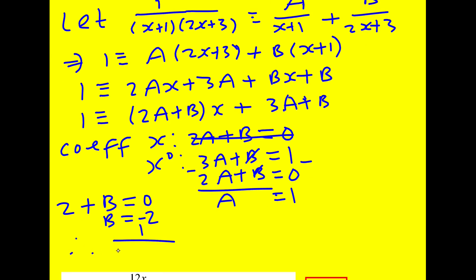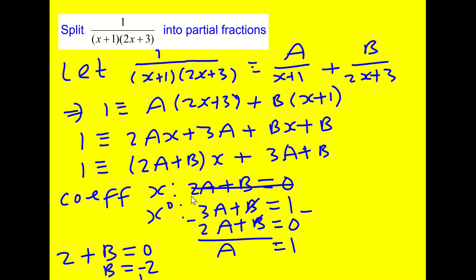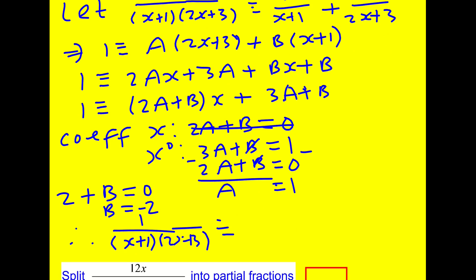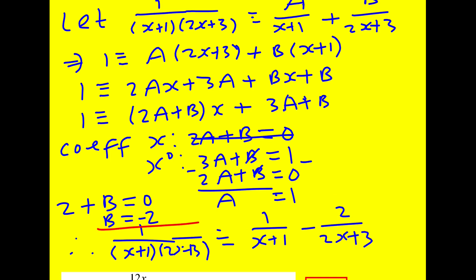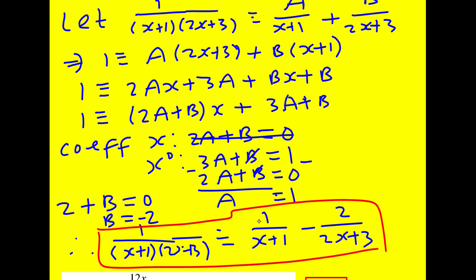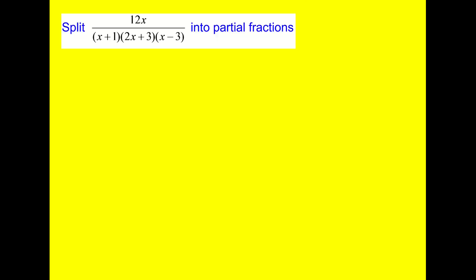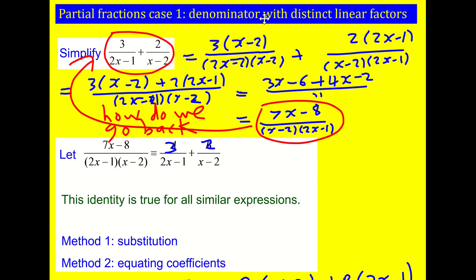Therefore, 1 over (x plus 1)(2x plus 3) is identically equal to 1 over (x plus 1) minus 2 over (2x plus 3). Note: if you have time, you can take the right-hand side and check you get the left-hand side by adding the fractions. If you get nice integer answers you can be fairly confident it's correct. This does fit into partial fractions with distinct linear factors — it's just that now I have three distinct linear factors.